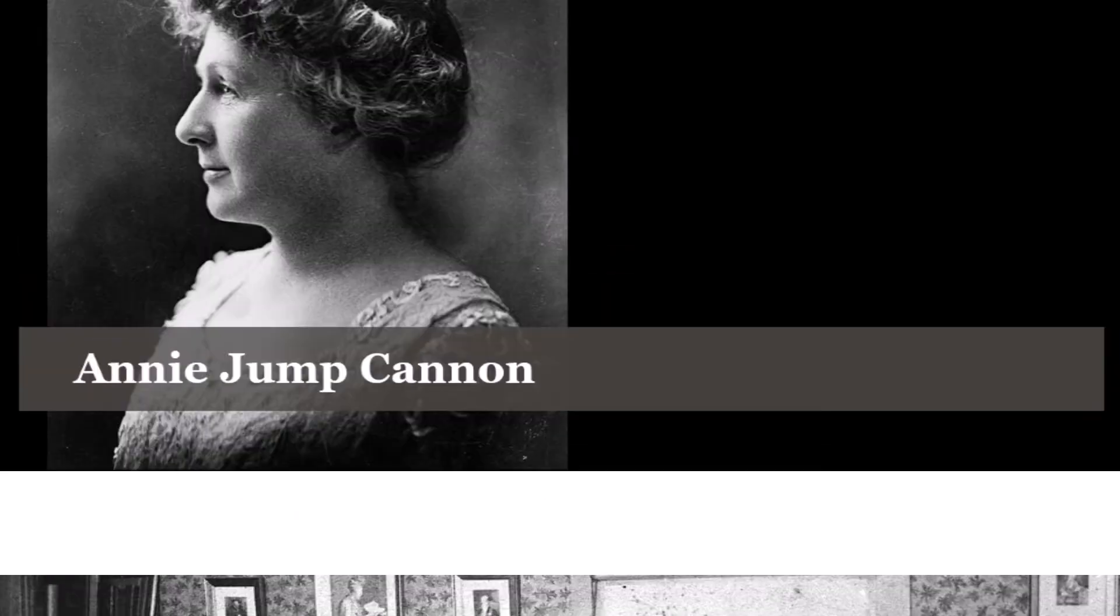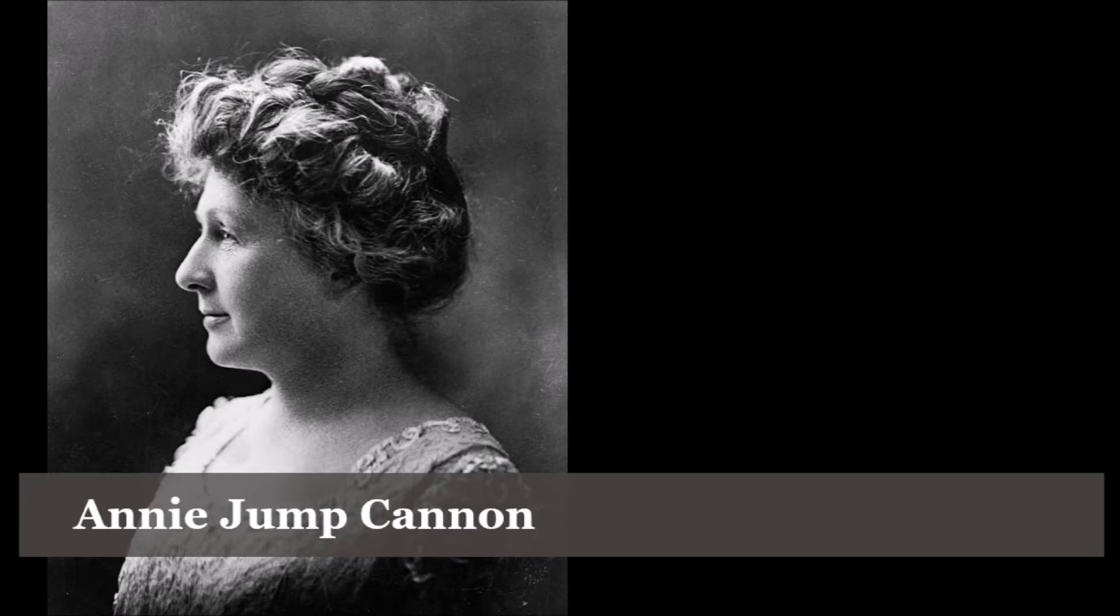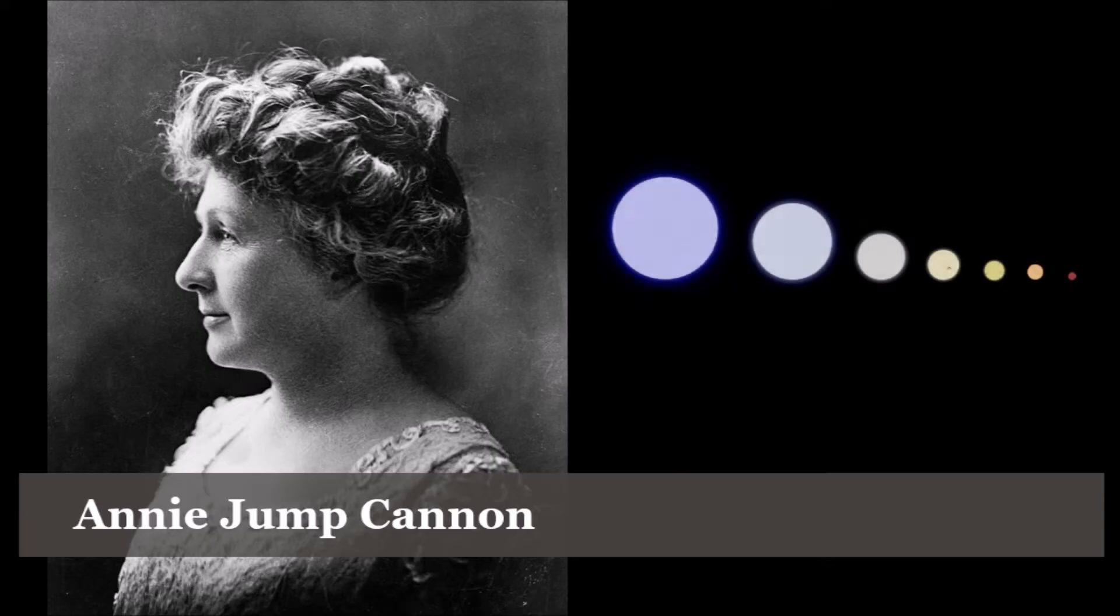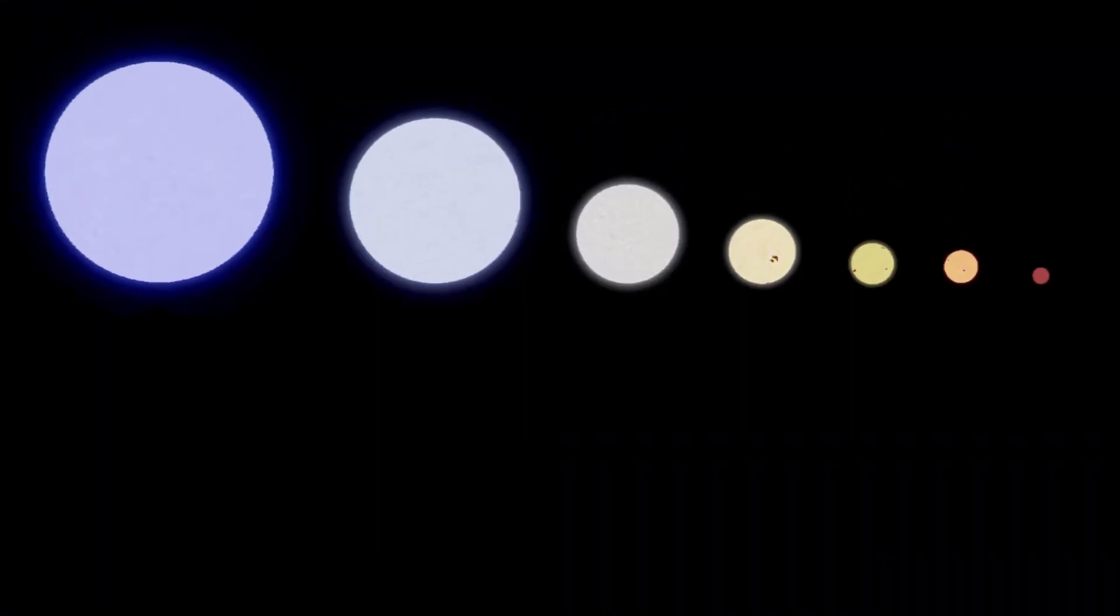One of these women, named Annie Jump Cannon, proposed a simpler method of classifying stars by their surface temperature, combining categories until there were only seven left. Since no one wanted to redo the classification that had already been done, the original letter categories were kept but rearranged into a seemingly random order: O, B, A, F, G, K, and M.